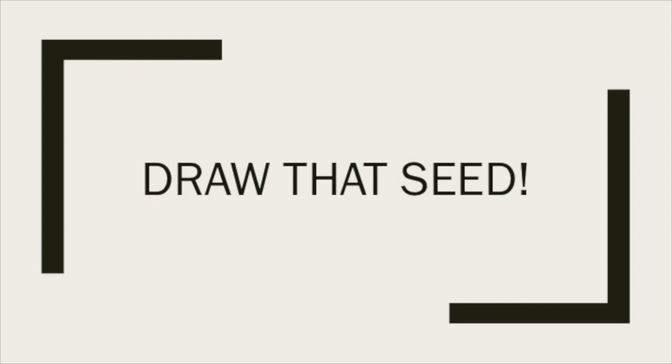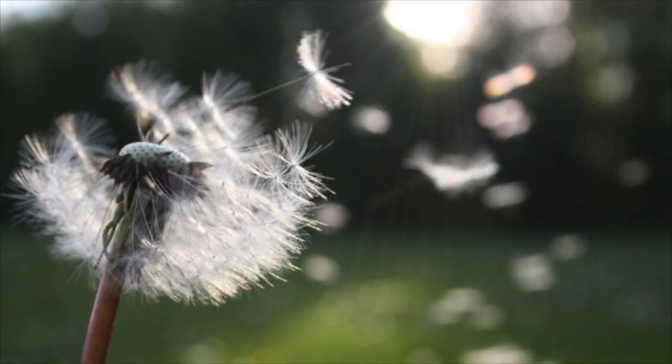Ready? All right. I am a fluffy seed. I'm very soft to the touch. And I float in the air. I have lots of seed friends around me. And when we're all together, we are a round shape like a ball. Got it? What am I? I'm a dandelion seed. So soft and fluffy. We're going to be talking a little bit more about these in a moment.